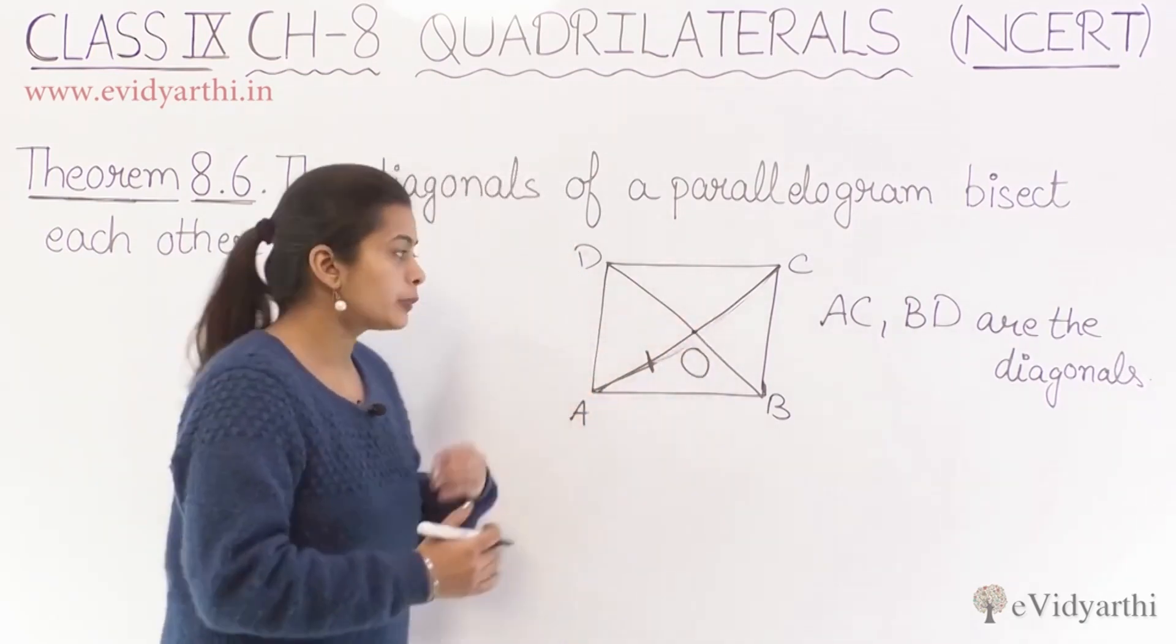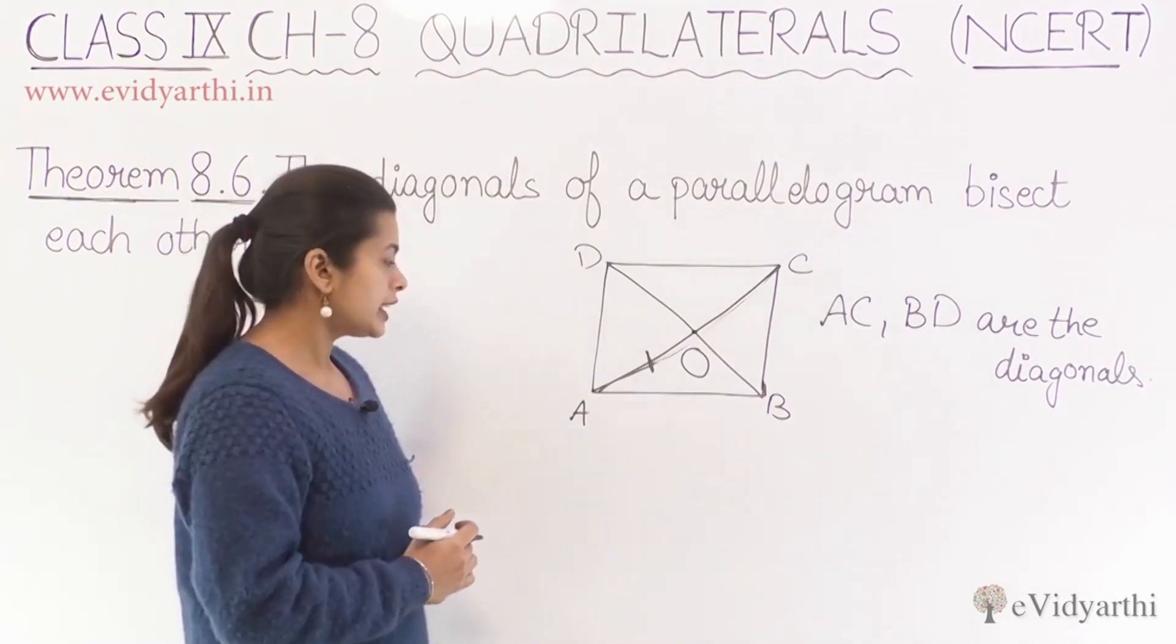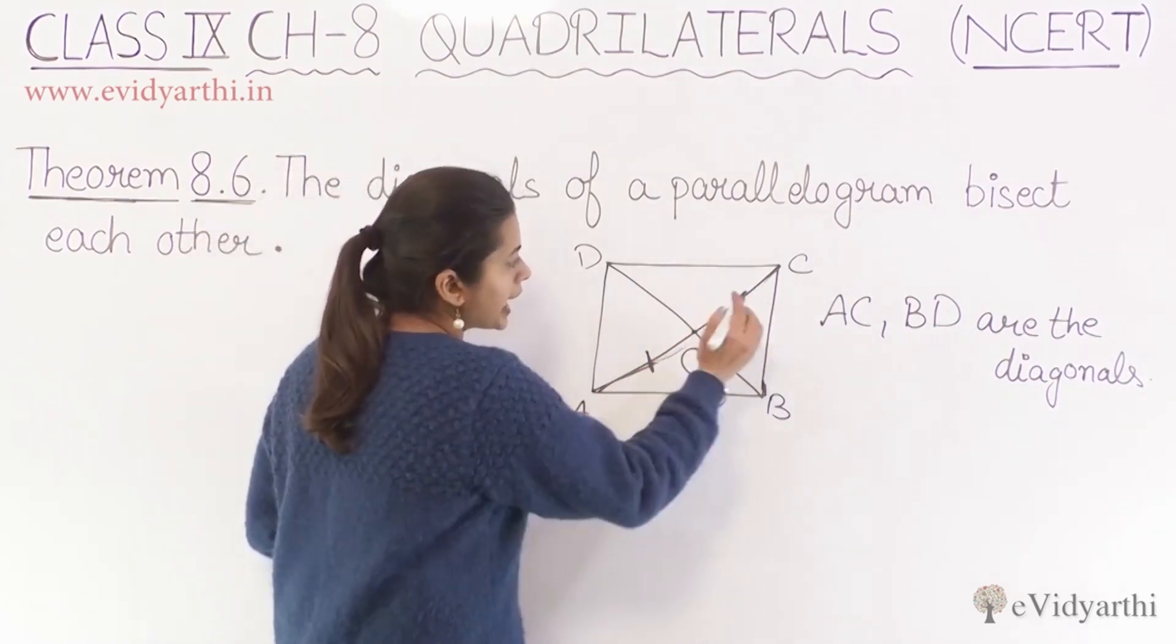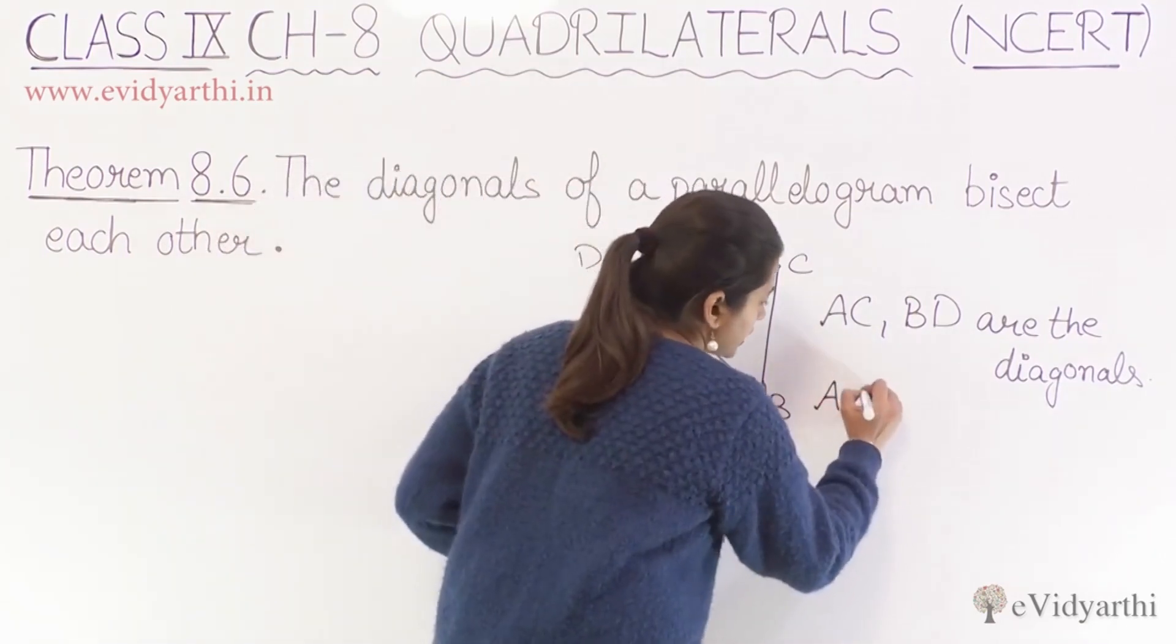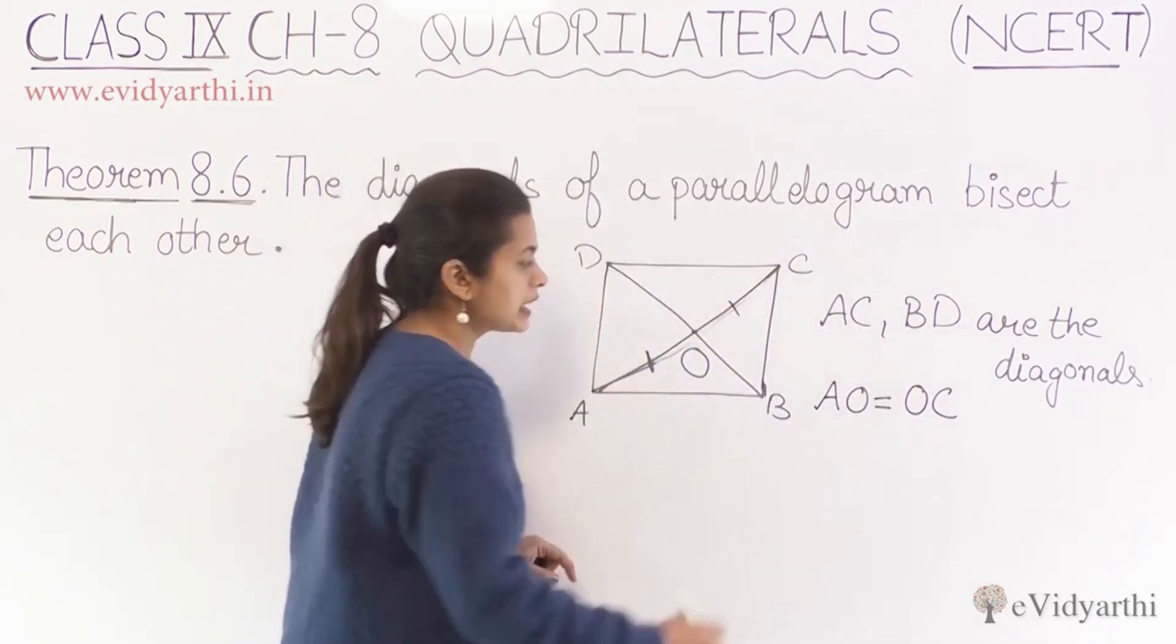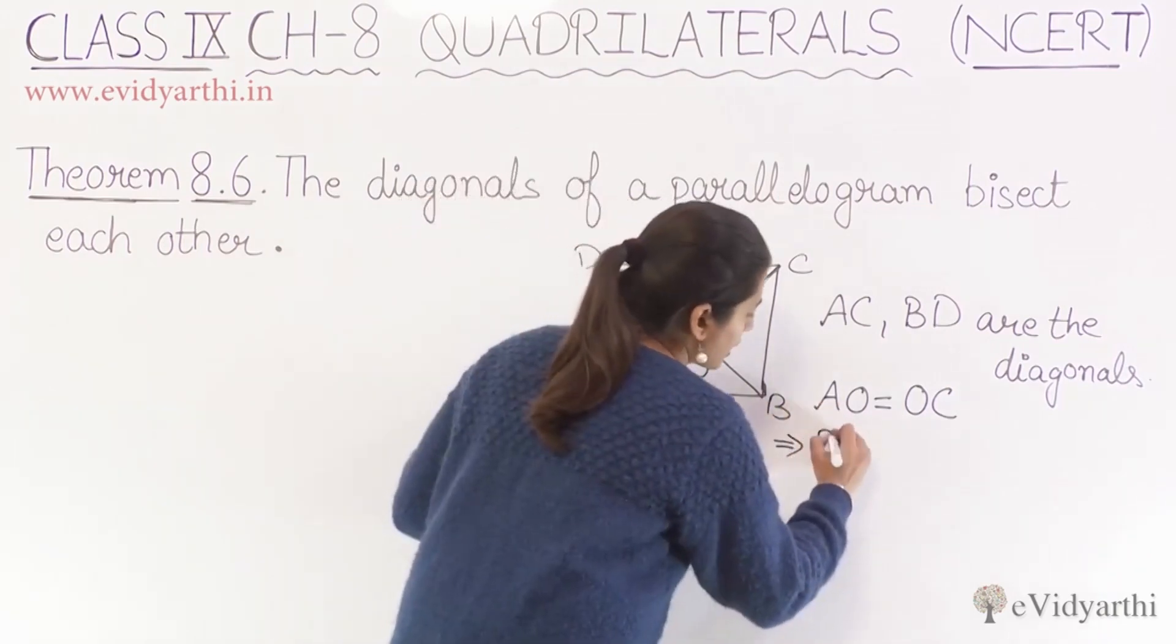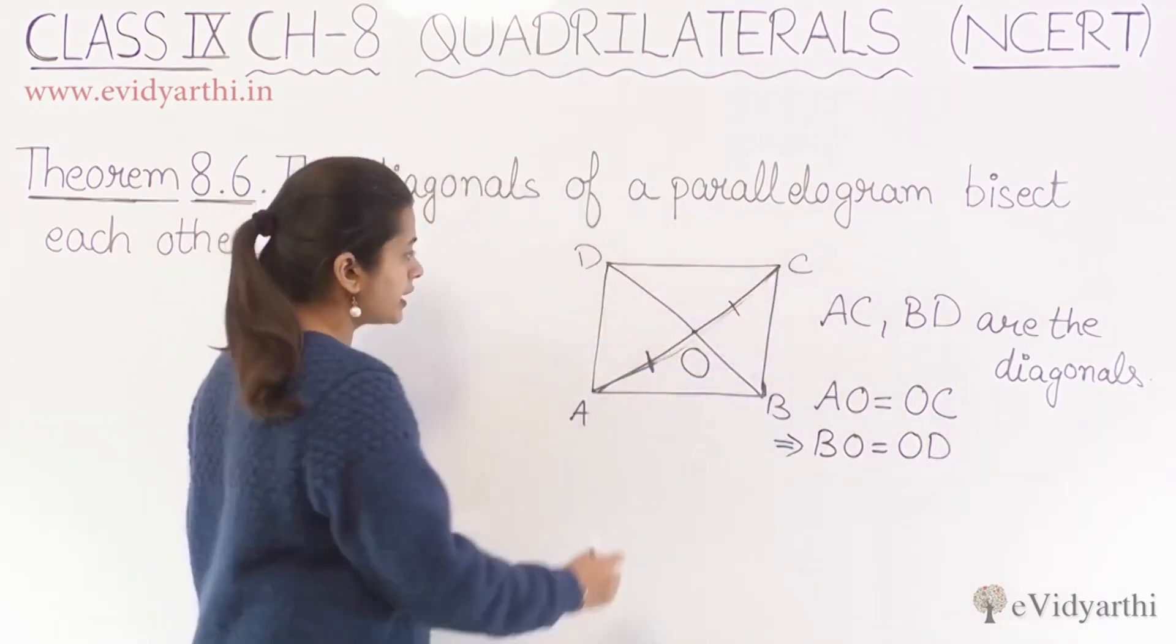This intersection point will serve as a midpoint for both the diagonals. Midpoint behavior means that it divides our entire diagonal into two equal parts. So we can say that AO equals OC. Similarly, for the other diagonal, BO equals OD in length.